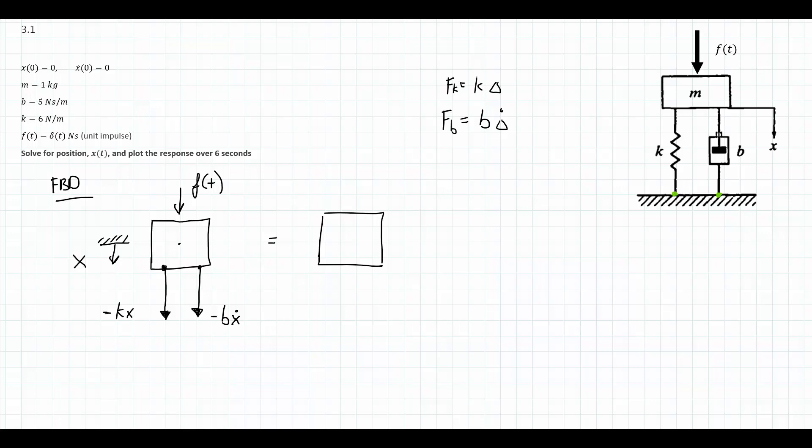The other force technically acting on the mass is its own weight. Almost always, though, we are going to ignore gravity in these free-body diagrams. The gravitational force is typically much smaller than the other forces, and because we're always looking at perturbations from equilibrium, it doesn't come into play — we've already accounted for the weight in how much the spring is compressed at the equilibrium point.